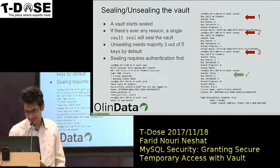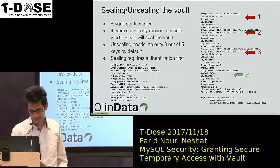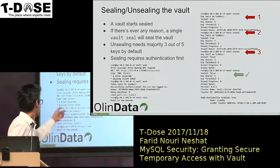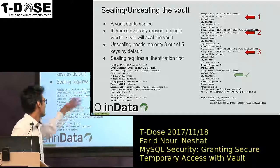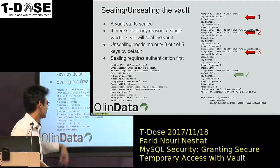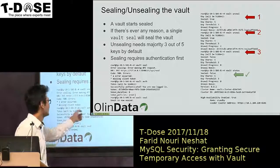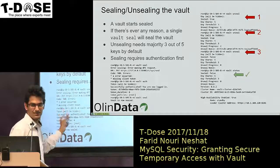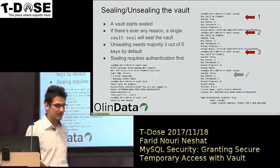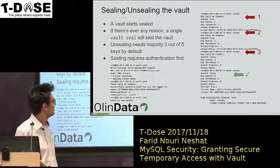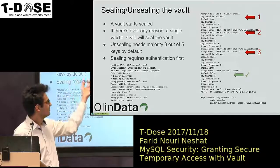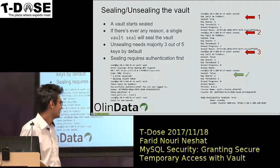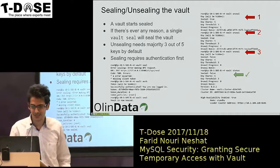Here's an example of unsealing Vault. We try to seal Vault and there's a missing client token, so we have to authenticate. We authenticate with the token it gave us, and then we try to unseal it. We provide the first key, the second key, and the third key — and now it's unsealed. Now you can access it via the API.